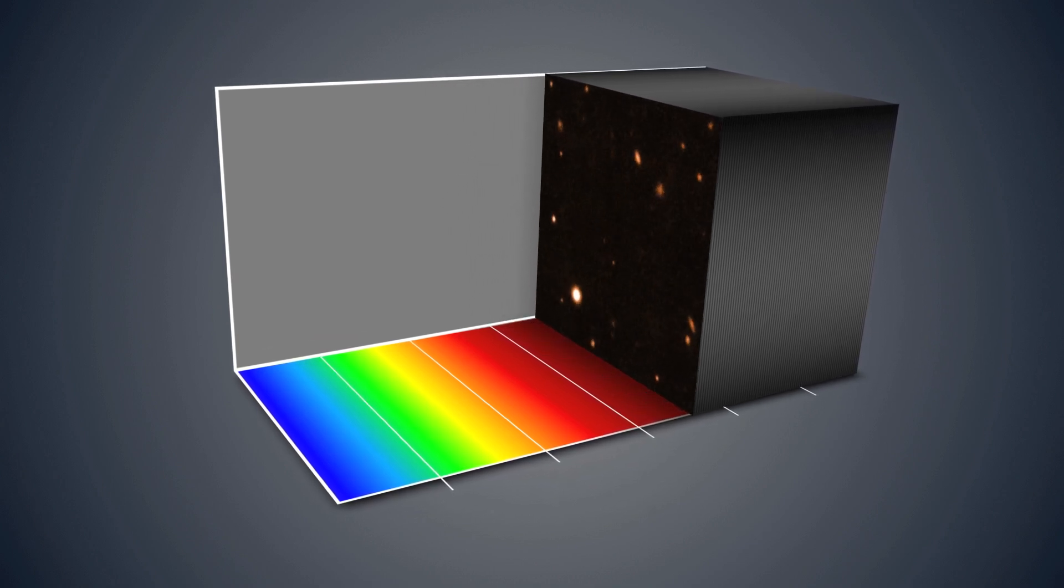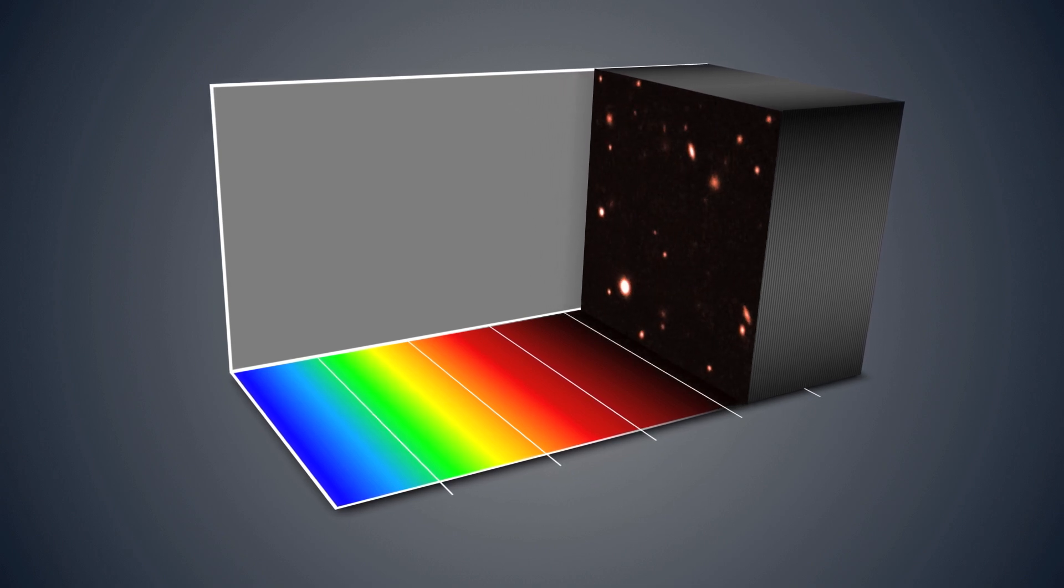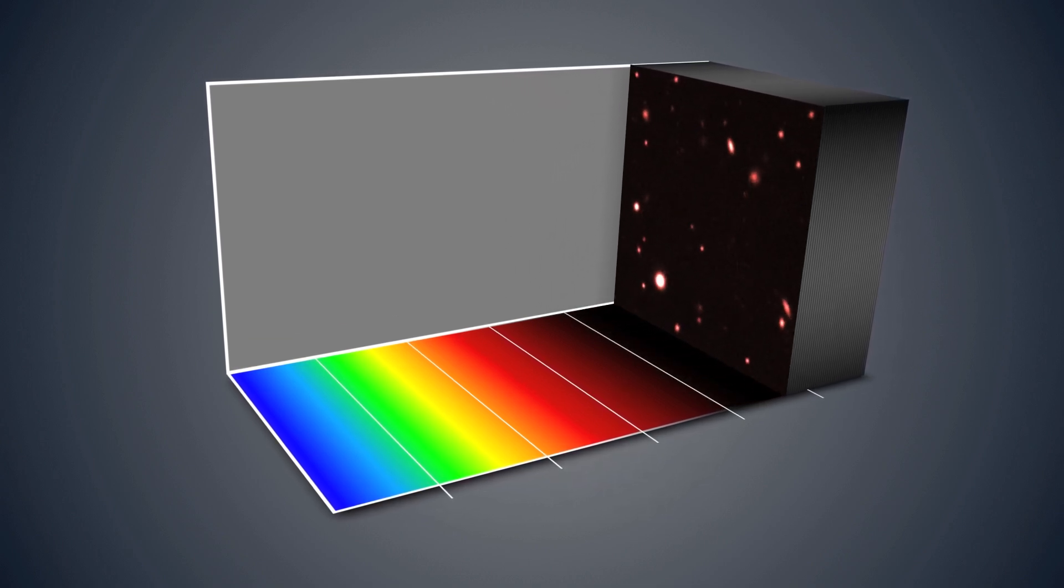Instead of producing a single image, MUSE produces a stack of thousands of images, each showing the view in a different color.